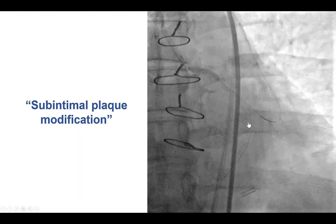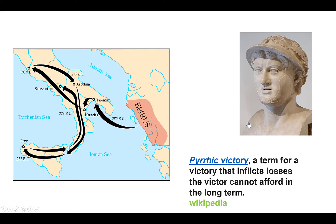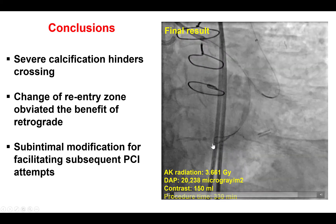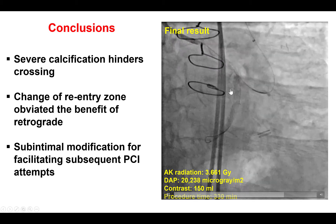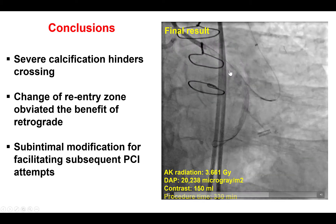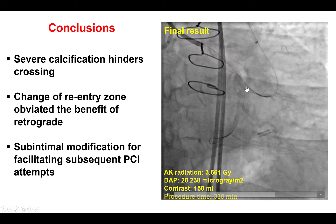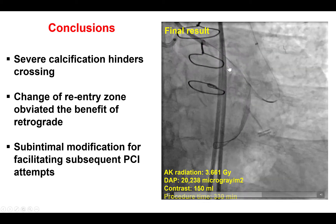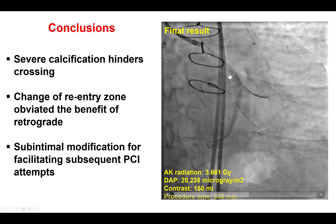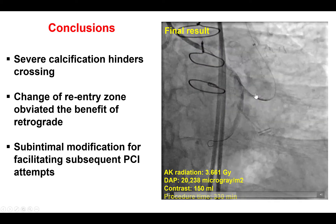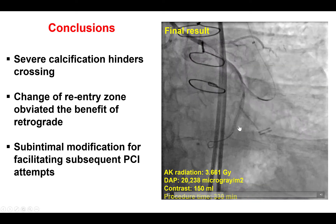We did balloon inflation in the subintimal space — the so-called investment technique or subintimal plaque modification. This is an example of a pyrrhic victory: we were able to complete our reverse CART, but at the cost of dissection that did not allow us to enter the important distal true lumen in the distal circumflex. This is the final result — there is some antegrade flow through the dissection planes, but that is clearly a suboptimal result. The lesson here is that severe calcification can hinder crossing both in the antegrade and retrograde direction. We started our dissection more proximal to reach a different re-entry zone, but that compromised entry into the distal circumflex — we won the battle of completing the reverse CART but lost the war of re-canalizing the distal circumflex.